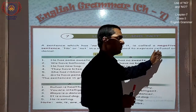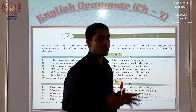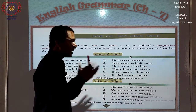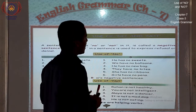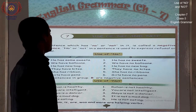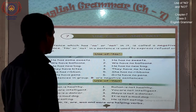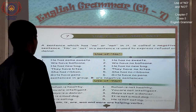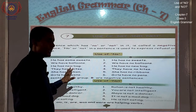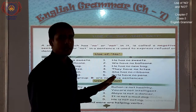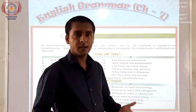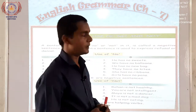नकारात्मक भाव को — यानी refusal को, नकारात्मकता को, 'नहीं' को — express करता है। Use of 'no' — इसके कई examples दिए गए हैं। हम लोग one by one देखेंगे और examples के through use of 'no' को understand करेंगे।